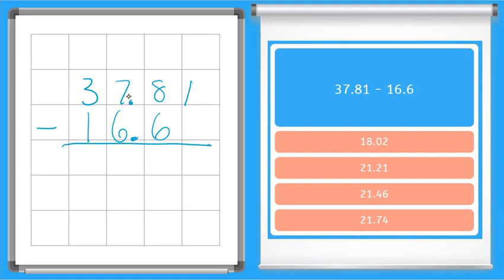Okay one minus nothing here. It's like one minus zero is one and we have eight minus six is two. Bring down our decimal. Seven minus six is one. Three minus one is two. And then there we go our final answer, 21 and 21 hundredths, right there.